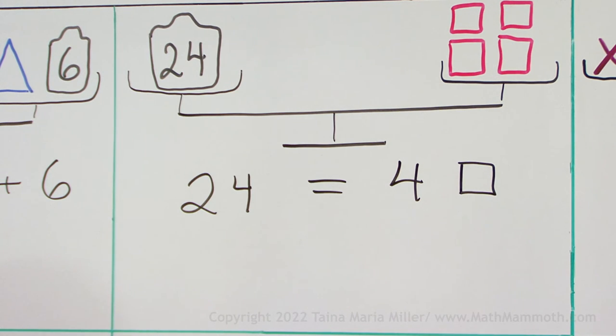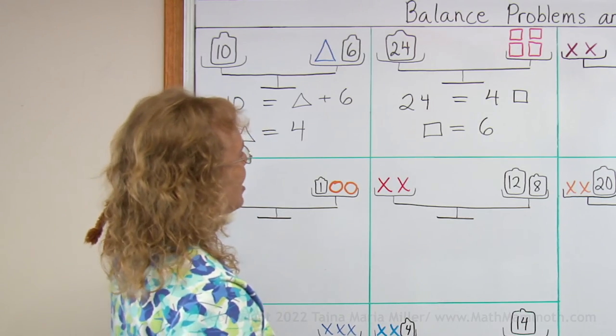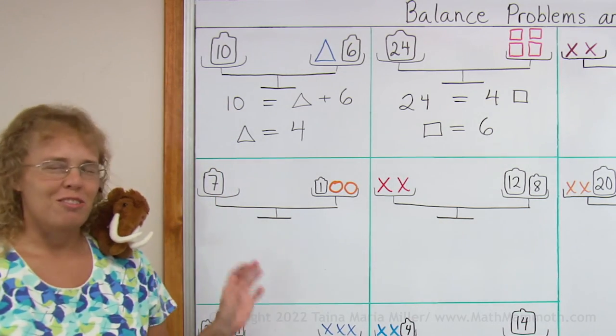And then my solution is how much does 1 square weigh? 1 square equals 6 kilograms. So that was easy too. Actually all of these are pretty easy.